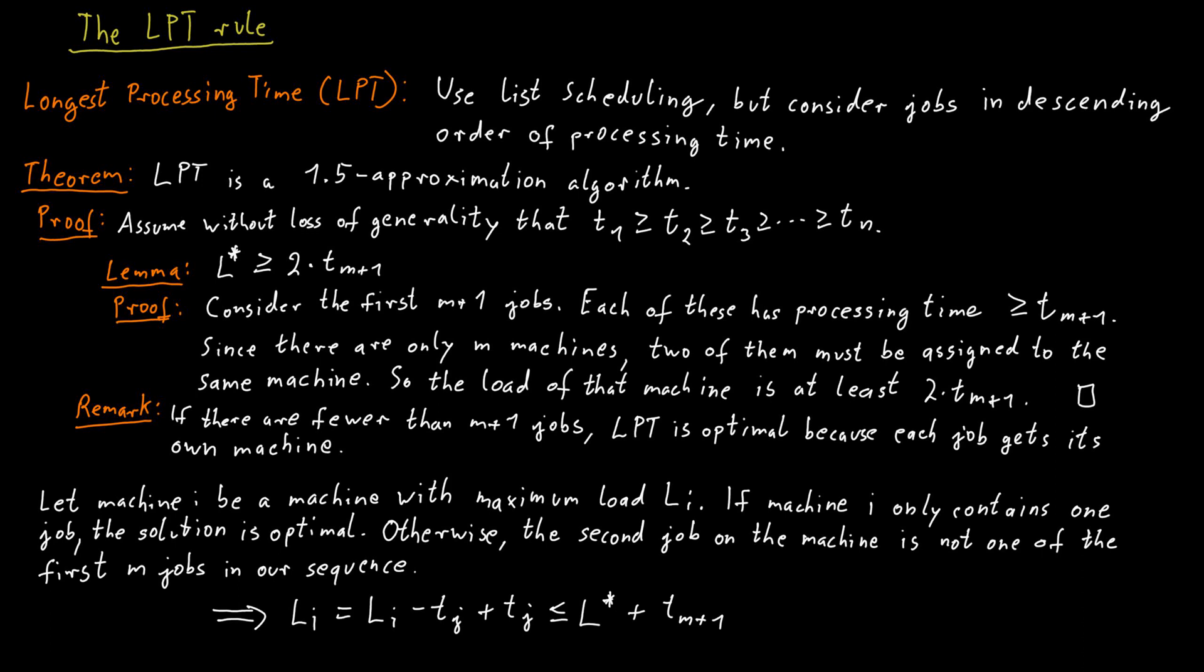And we know that the size of the m plus 1 largest job is a lower bound for the optimal makespan divided by two. And so, we just plug all of this in and we get that the load of machine i at the very end of the allocation is at most three over two times the optimum makespan.